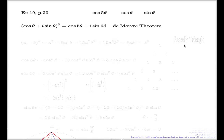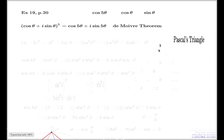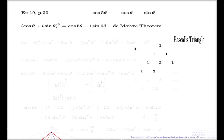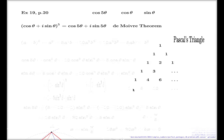Here is my Pascal triangle grown to level 5. I start 1 and 1. 1 and 1 together gives me 2. 1 and 2 gives me 3. Then 1, 4, 6, by symmetry. Then 1, 5, 10, by symmetry. Here's my Pascal triangle grown to level 5. I can now use the coefficients to produce the expansion.